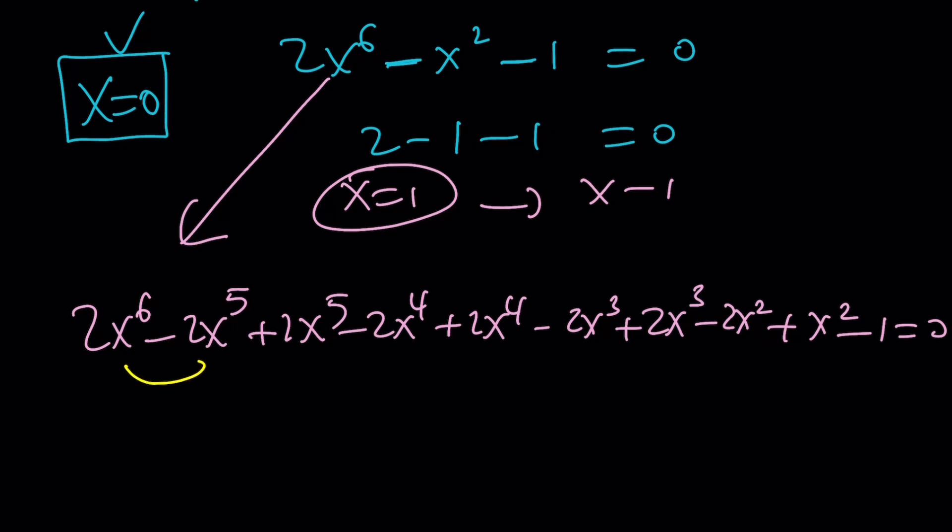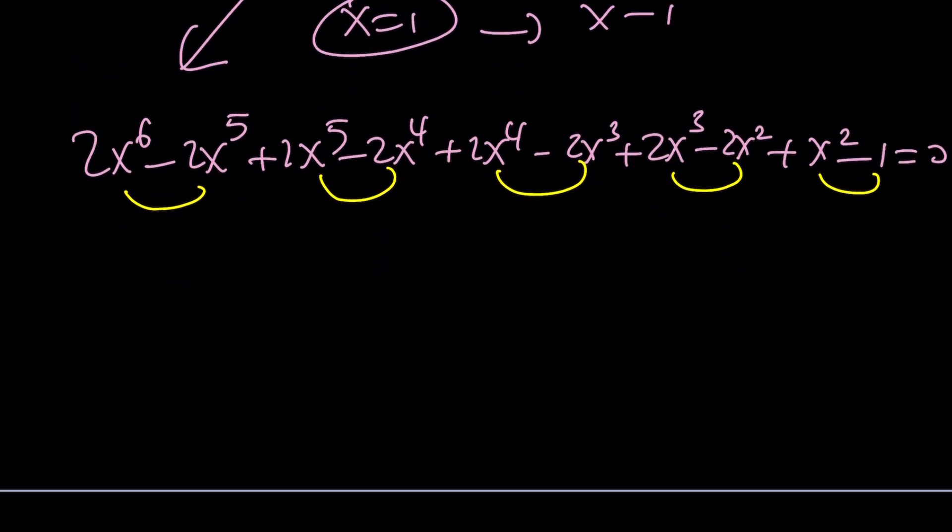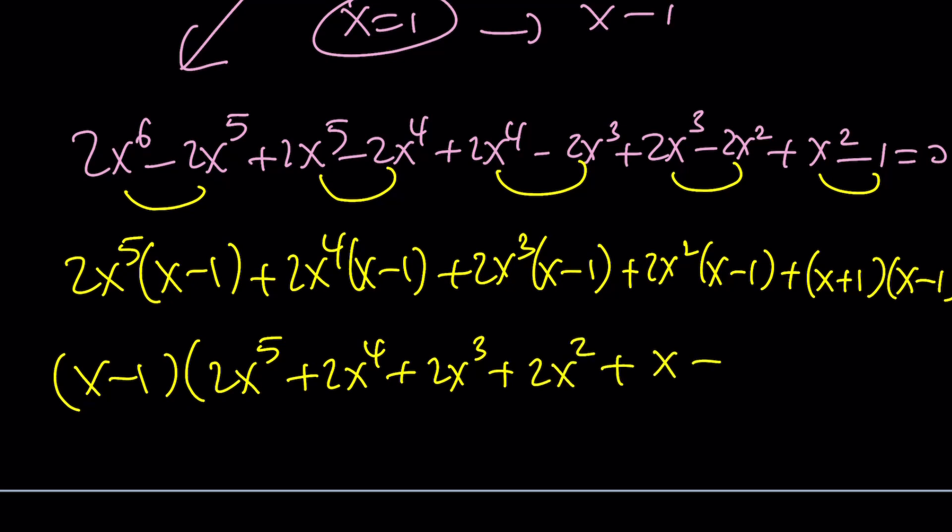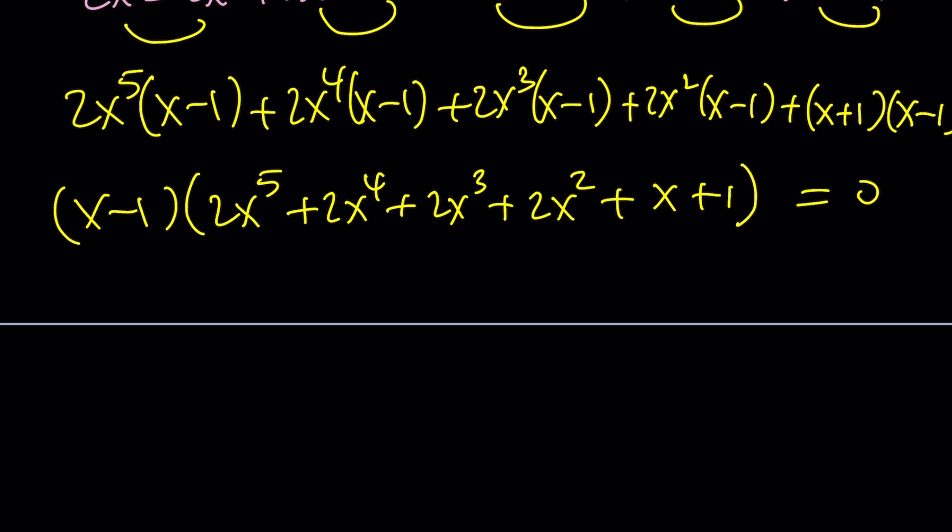Too painful, right? Anyways, you get the idea. Now I can take out 2x to the fifth and that'll give me x minus 1. I can take out 2x to the fourth. That'll give me x minus 1. And just keep doing this until you hit the end. 2x squared x minus 1. And finally, this is x plus 1 times x minus 1. Notice that x minus 1 is a factor. We already talked about it. And the other factor is 2x to the fifth plus 2x to the fourth plus 2x cubed plus 2x squared plus x plus 1 equals 0. x equals 1 already known. What about the other one? How do we factor it?